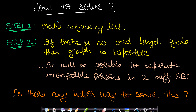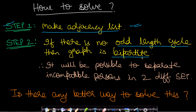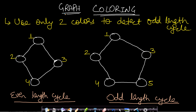After understanding bipartite graphs, we can use graph coloring to detect odd-length cycles. The first step is to make an adjacency list from our array of pairs. Then we check if there is no odd-length cycle, because if there is no odd-length cycle the graph is always bipartite and we can separate incompatible persons into two different sets. A good approach for this is graph coloring using only two colors.